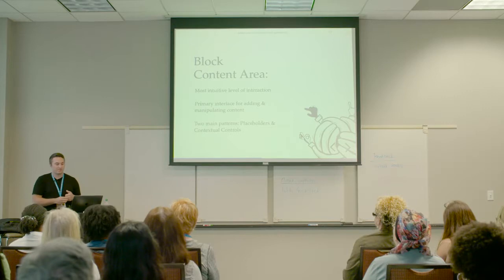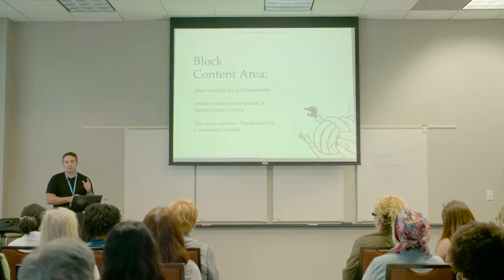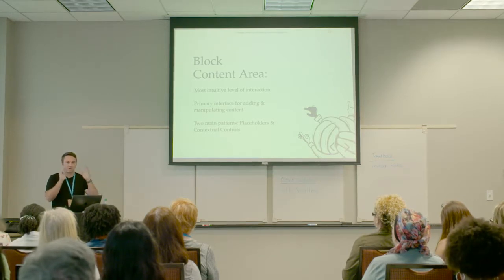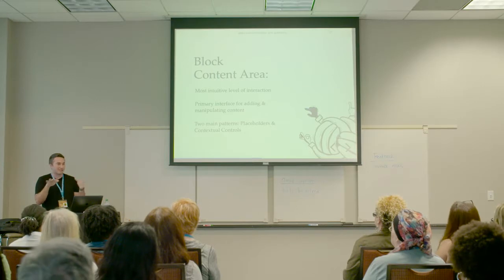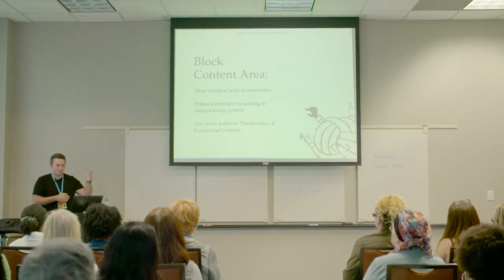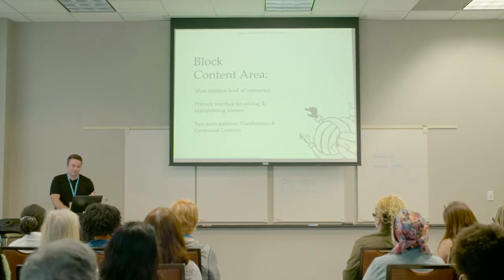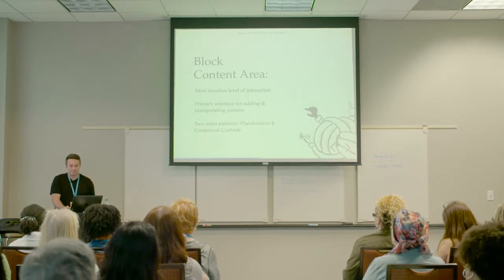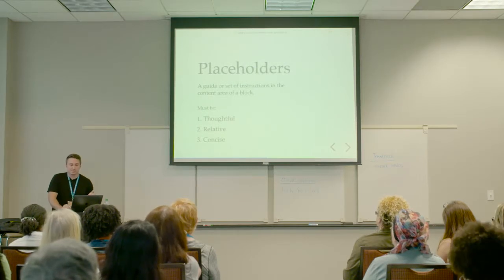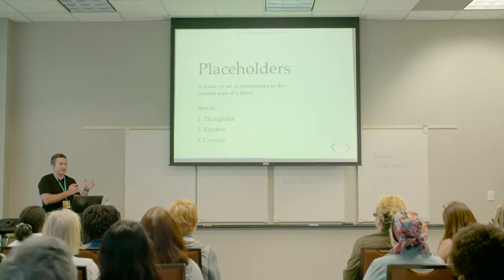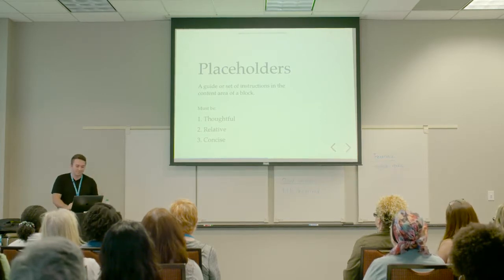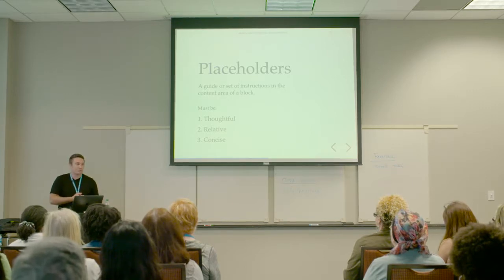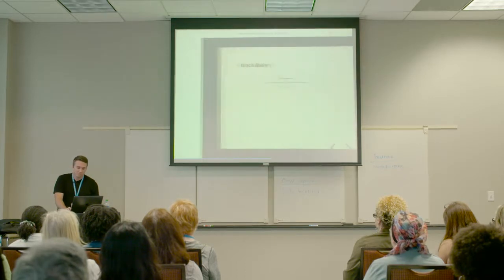Interaction within the block content area is the most intuitive to use and should be thought of as the number one primary interface for adding and manipulating content. This is when you're first looking at a block — like the paragraph block — all you do is type. It's direct, it's in your face, and that's exactly all you need to do. If you want to do extra stuff, there are other controls elsewhere. There are two main patterns for interacting within a block's content area: placeholders and contextual controls. The first is the placeholder, which is content within the content area that can be thought of as a guide or instructions in the interface for the user to follow. It must be thoughtful, entirely relative to the situation, and short and concise.